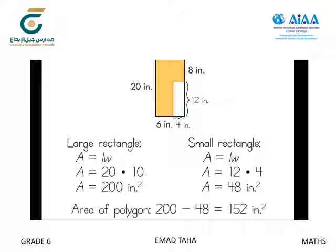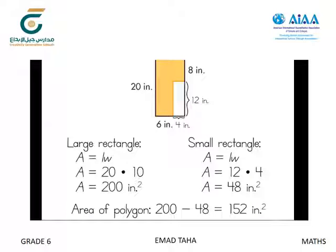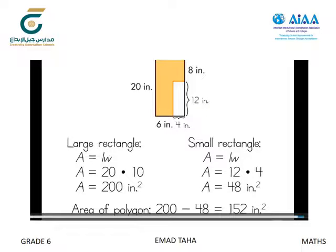Finally, they subtract the area of the smaller rectangle and find that the total area of the polygon is 152 square inches. Regardless of the method they use, these students show an understanding of how to find the areas of polygons by composing or decomposing them into familiar shapes for which the area formulas are known.